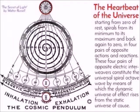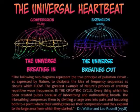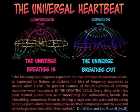These four pairs of opposite electric interweavers constitute the universal spiral octave wave by means of which the dynamic universe of effect rises from the static universe of cause. The octave wave formula, which governs all motion and its birth position in the universal wave, is the two-way journey from zero through zero to zero. Zero to four means the centripetal direction toward the apex of the spiral, which leads to higher potential, density, gravity, and the white heat of incandescence. Four to zero means the centrifugal direction toward the base of the spiral, which leads to lower pressure, lower potential, vacuity, radiativity, and the black hold of space. Each of these is half of a cycle.